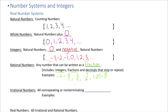Rational numbers also include any decimals that repeat. For example, 0.3 repeating — the bar on top means it keeps going as 0.3333... forever. That can also be rewritten as a fraction. All I'm asking you to recognize is that decimals that stop or repeat can technically be written as a fraction.